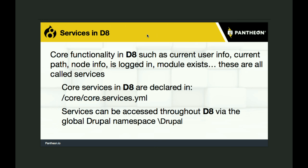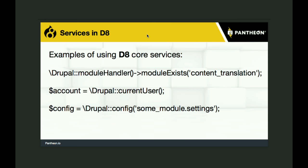Core functionality in Drupal 8 — such as current user, current path, node info, who's logged in, does a module exist — you get out of the core service object where everything is packed into one big object. That object is called Drupal. Using backslash Drupal gives you access to everything Drupal has created in this bootstrap. For example: get the module handler and check for module exists passing 'content_translation' — returns true or false. To get the current user, set account equal to Drupal::currentUser(). To get configuration, use Drupal::config('module.name')->get('settings').